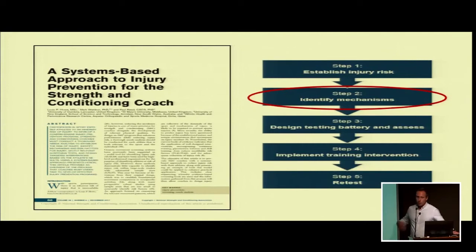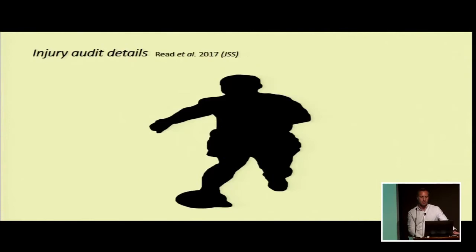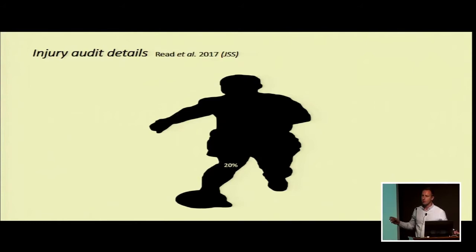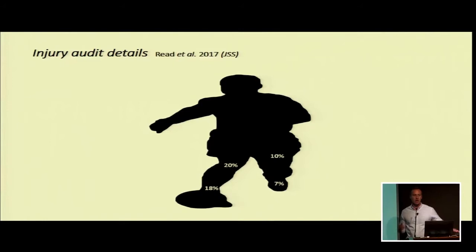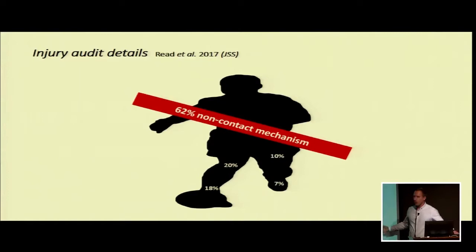Let's now look at the second part of our system: mechanisms of injury. From the same injury audit, we wanted to look at the most common injuries to see if there's been a change from the Price study. The knee became the most common injury, accounting for around 20% of all injuries — most of those being knee ligament injuries. Ankle was our second most common injury, then quad injuries as the most common muscle injury, with smaller amounts of foot, hamstring, and groin injuries. Notably, 62% of these injuries were non-contact in their mechanism. We've got a much better chance of preventing non-contact injuries than those occurring due to player contact.